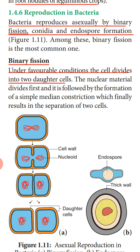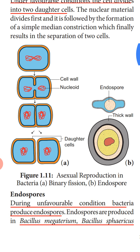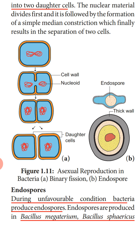The most common type of asexual reproduction in bacteria is binary fission. Binary fission takes place only in the presence of favorable conditions. If the external environmental or other conditions are unsuitable, then endospore formation will take place.